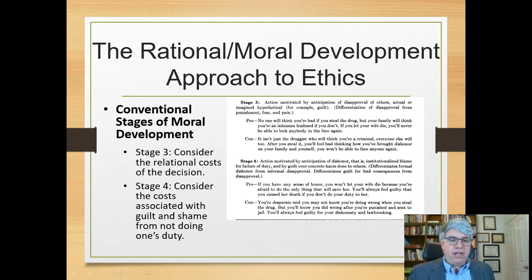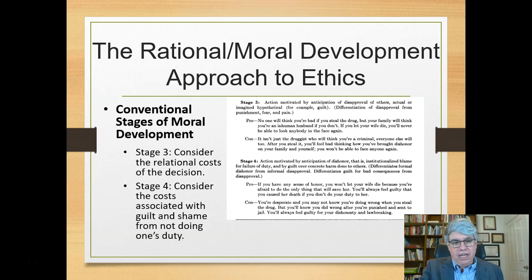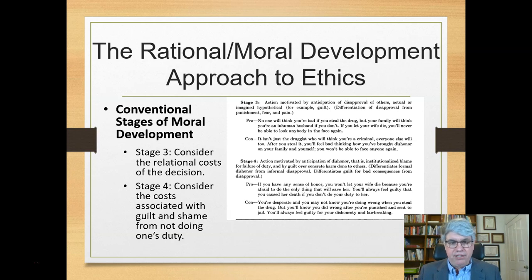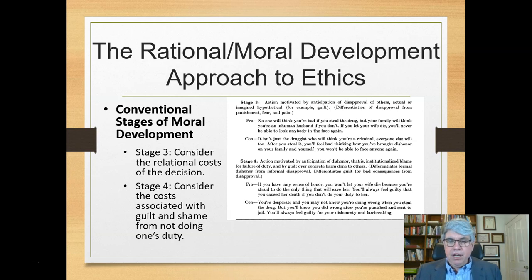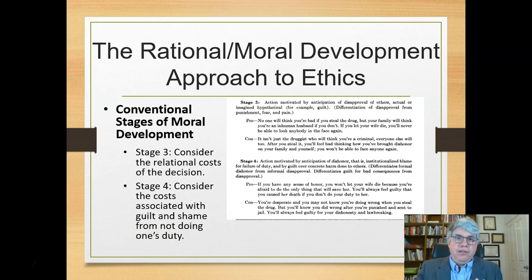Stage four is where you consider the costs associated with guilt and shame from not doing one's duty. Reasoning that could lead to stealing the drug: if you have any sense of honor, you won't let your wife die because you're afraid to do the only thing that will save her — you'll always feel guilty for causing her death if you don't do your duty. But you could also reason that you'd always feel guilty for your dishonesty and law-breaking if you do steal it.